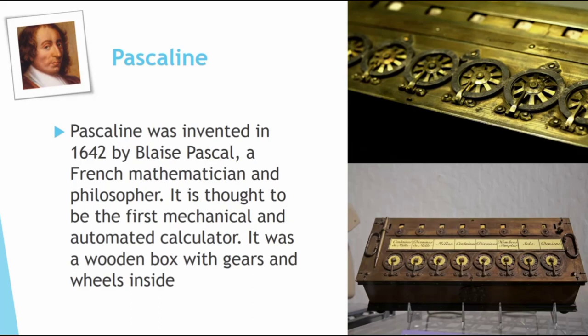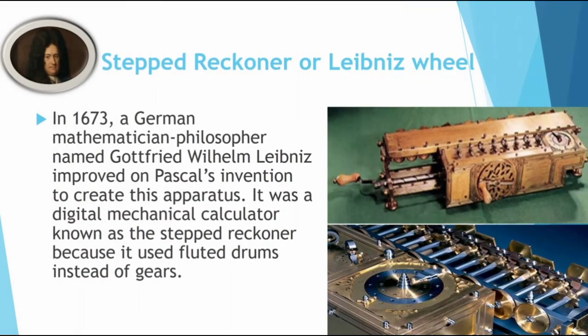The third early device is the Pascaline, invented in 1642 by Blaise Pascal, a French mathematician and philosopher. It is thought to be the first mechanical and automated calculator — a wooden box with gears and wheels inside. The Stepped Reckoner was built in 1673 by German mathematician and philosopher Gottfried Wilhelm Leibniz, who improved on Pascal's inventions. It was a digital mechanical calculator that used stepped drums instead of gears.